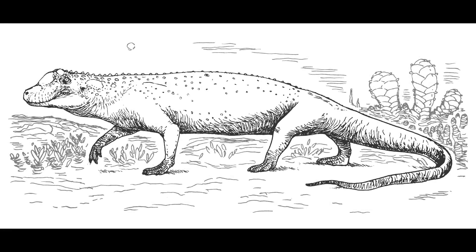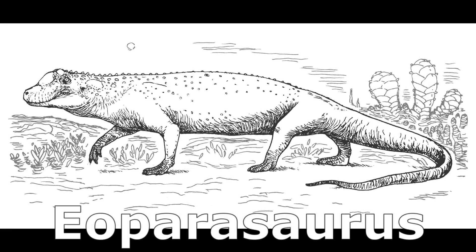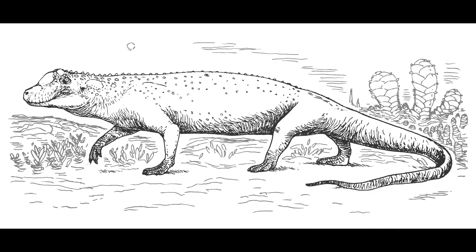Kozman started this whole thing off pretty simply, with the Eoparasaurus having a very simple lizard-like build with a long tail and its body close to the ground due to its slender bent legs. In this speculative world, the Eoparasaurus is supposed to be the ancestor of every other creature within this experiment, so it's possibly one of the earliest of this clade. It was typically omnivorous, switching back and forth from eating plants and animals based on opportunity.